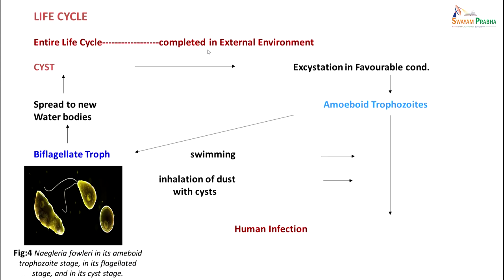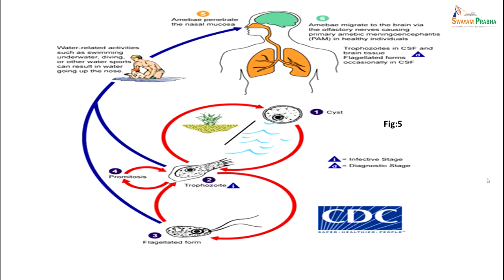The entire life cycle is completed in the external environment. A cyst present in water bodies undergoes excystation in favorable conditions and amoeboid trophozoites are formed. These amoeboid trophozoites are the infective forms - by swimming or by inhalation of dust containing cysts, they can lead to human infection. Alternatively, they can change to biflagellate forms which spread to other water bodies, or revert to cyst form in the environment. Basically, a person gets infected through water containing these amoebae - they enter through the nose, go to the respiratory tract, and through the olfactory nerve reach the brain tissue. The amoeboid form is the one which causes infection; the biflagellate form keeps dividing and infecting more water bodies.